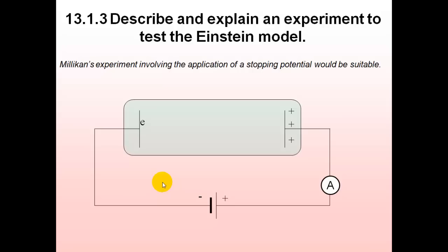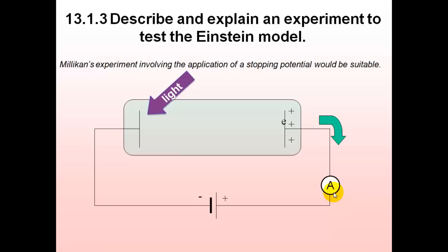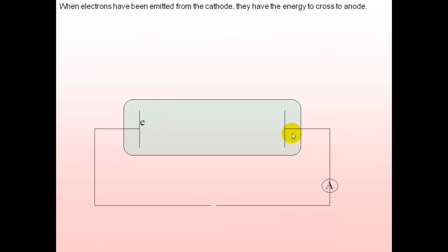In the experiment, a negative metal plate with electrons and a positive plate are connected to a battery. Light — violet or purple light — lands on the metal plate and gives enough energy to release electrons, which travel to the other plate, completing the circuit and producing a photocurrent. We want to find out exactly how much energy those electrons have.